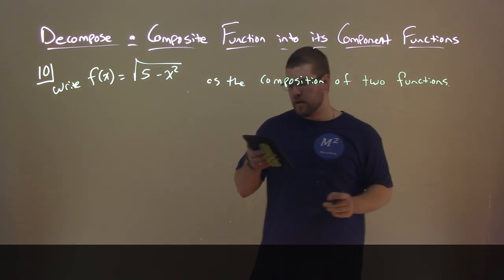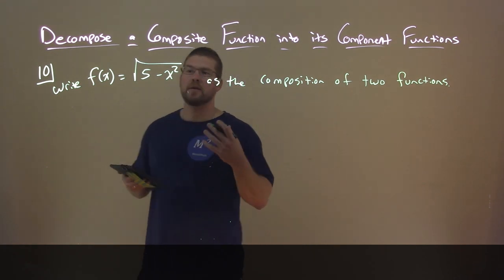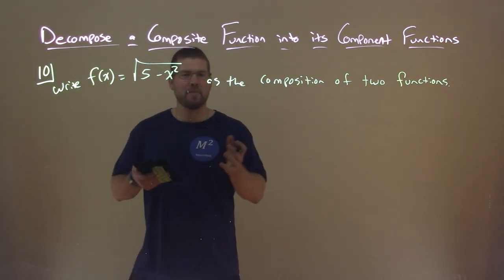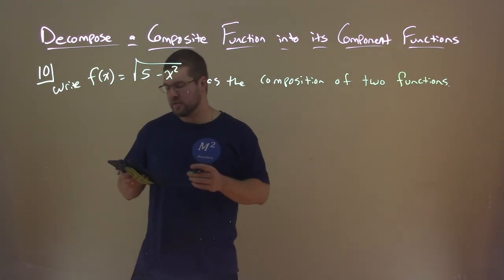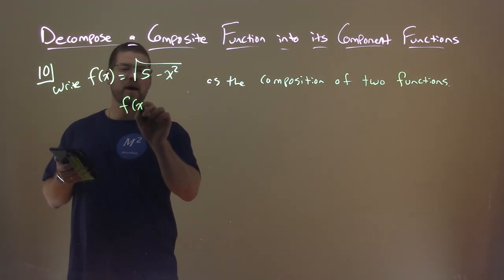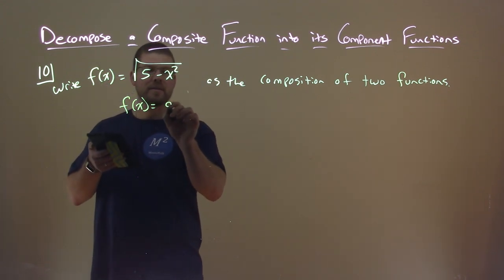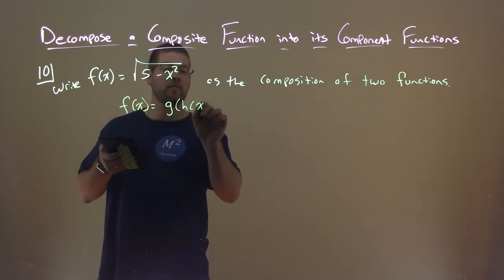Now the thing is there's many ways that we can do this. There's many different possibilities for writing this as a composition of two functions. So what we're trying to find here is where f(x) equals g of h of x.